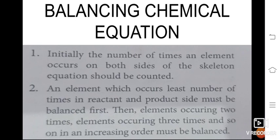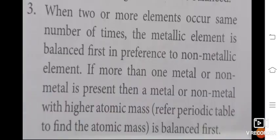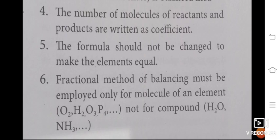Balancing the chemical equation: first, count the number of times each element occurs on both sides — the product side and the reactant side. Start with the element that occurs the least number of times. Then determine the more number of atoms taking part in the reaction to balance the atoms. If two or more elements act in the same number, balance accordingly. Count metals and non-metals separately. The number of molecules is written as a coefficient, and the formula should not be changed — only adjust the number of atoms.